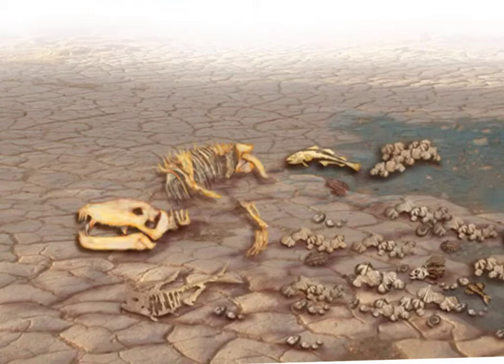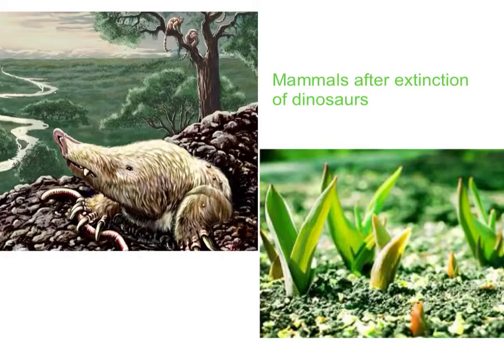A classic example would be mammals after the extinction of the dinosaurs. Mammals had been around for well over 100 million years, but prior to the dinosaur extinction, mammals were a relatively small group. After the dinosaurs died out, all of a sudden there were lots of new opportunities for animals to grow bigger, with no more predation from the dinosaurs.